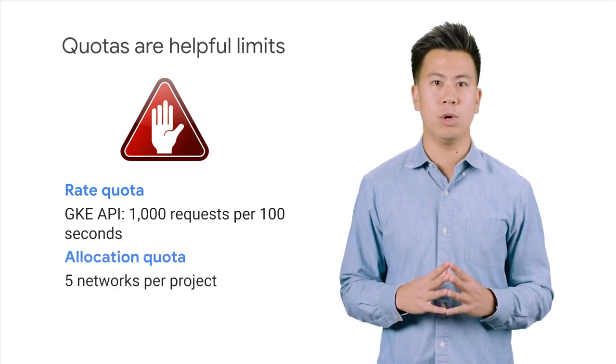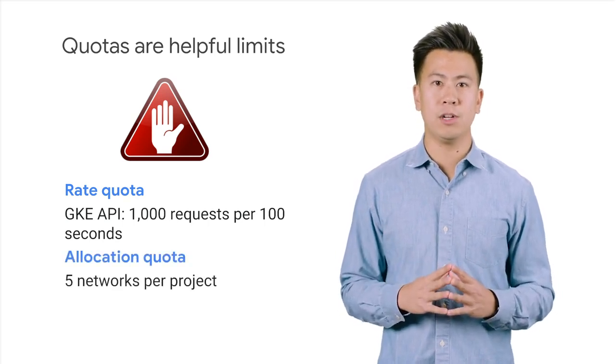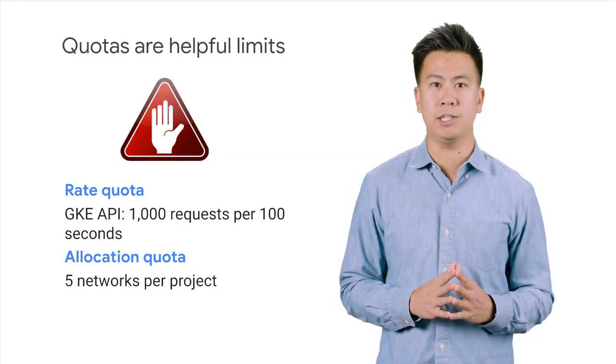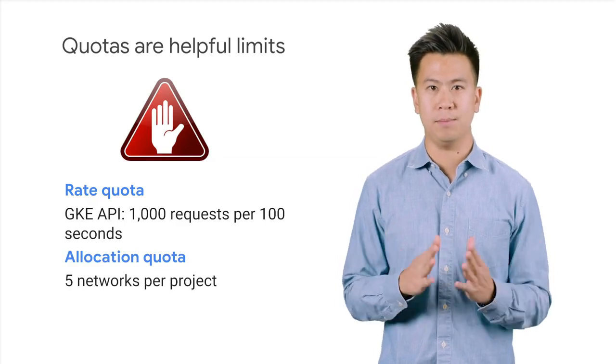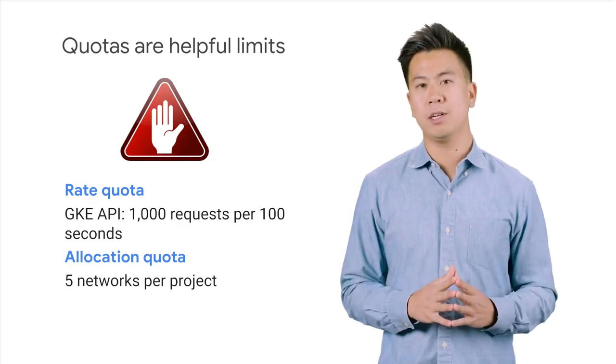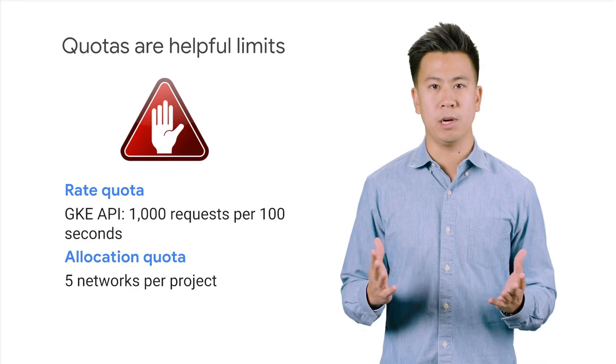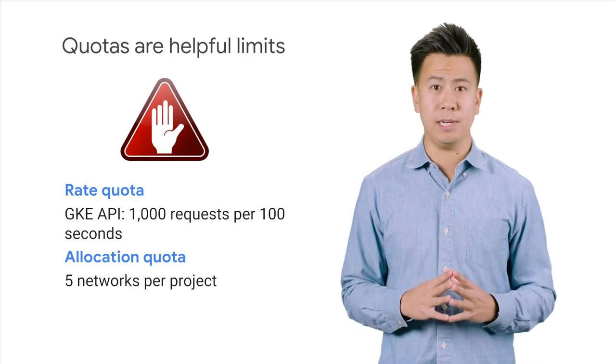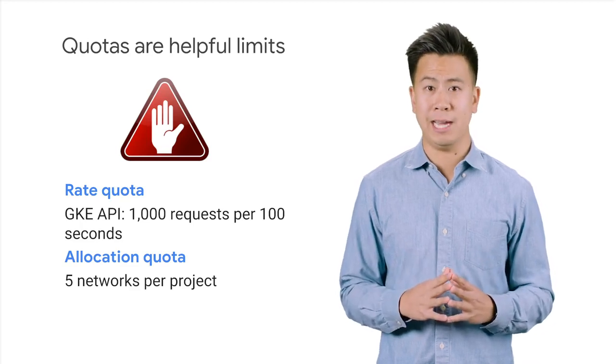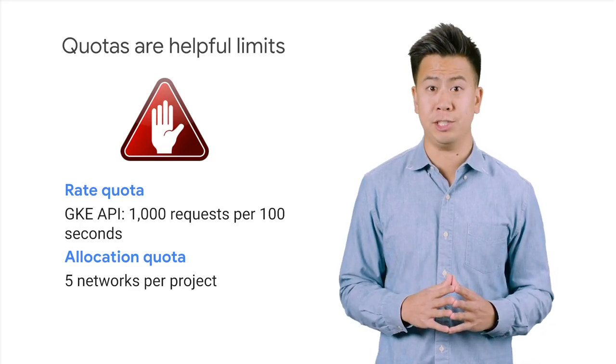Allocation quotas govern the number of resources you can have in your projects. For example, depending on your region, the number of GPUs permitted varies by type and region.